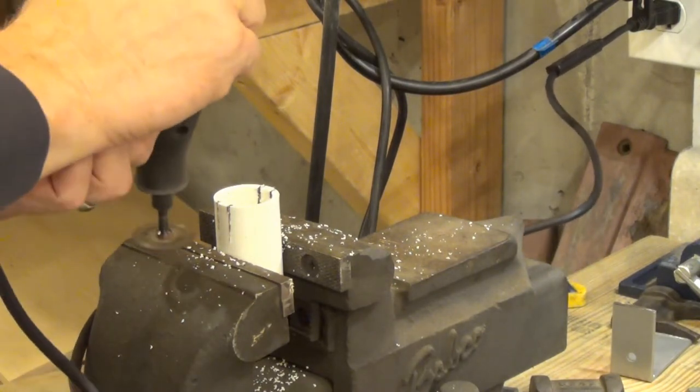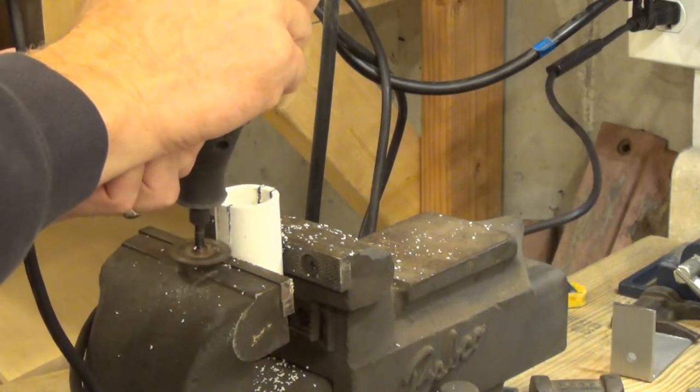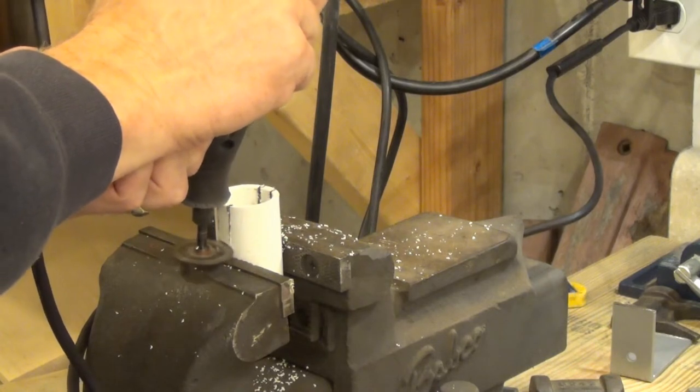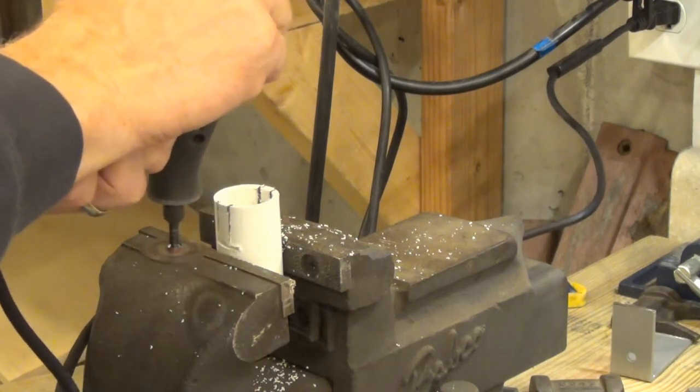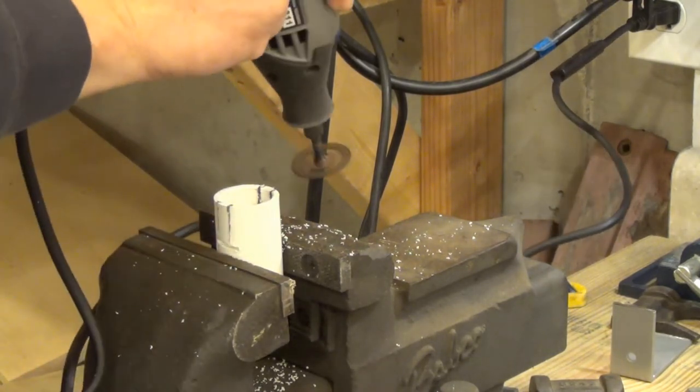I used a Dremel tool to cut the tabs most of the way through so I could break them off, but you could use a utility knife and score it at the base of the tabs to break them off, or you could drill them out with a three-eighths inch drill bit.